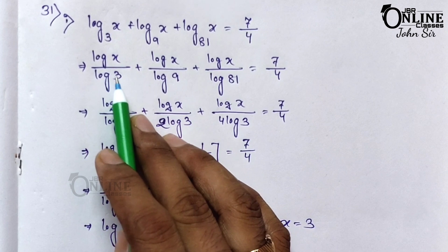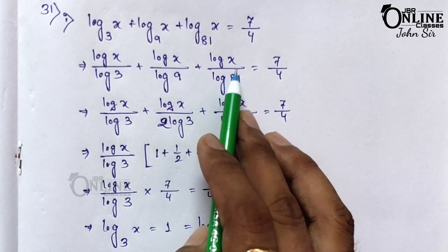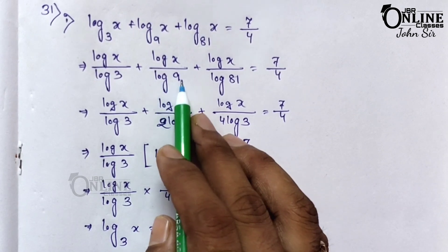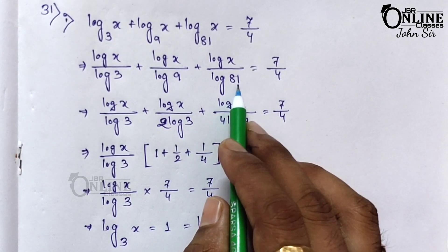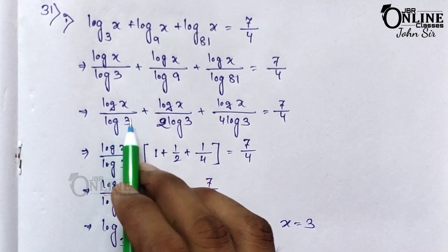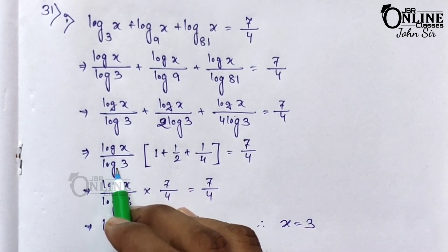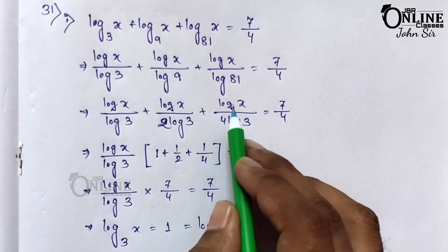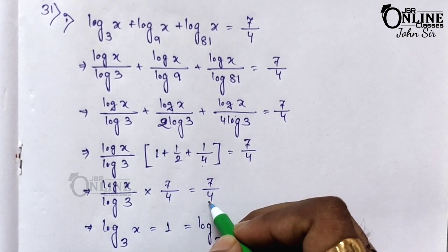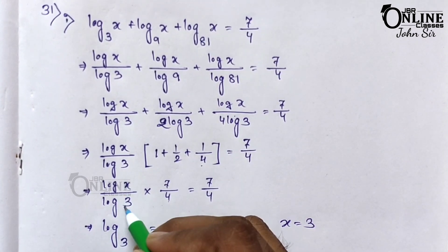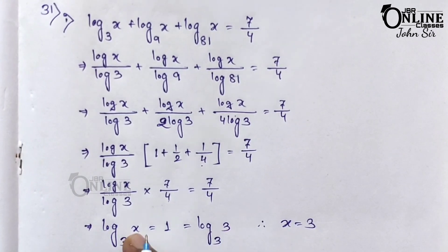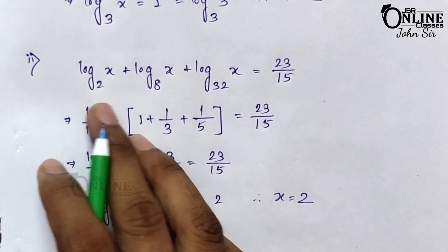For sum 31.1: each term becomes log x / log 3, log x / log 9, log x / log 81. Since log 9 = 2 log 3 and log 81 = 4 log 3, factoring out log x / log 3 gives: (log x / log 3)(1 + 1/2 + 1/4) = 7/4. The bracket sums to 7/4, so log x / log 3 = 1, meaning log₃ x = log₃ 3. Therefore x = 3.